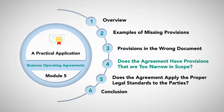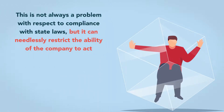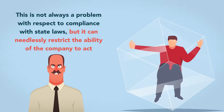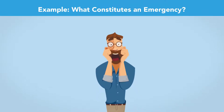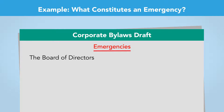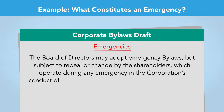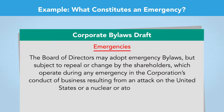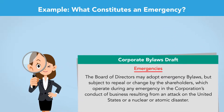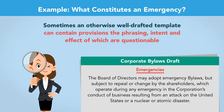Does the agreement have provisions that are too narrow in scope? The counterpart of missing or incomplete information in a template is a provision that's too confined in its application. This is not always a problem with respect to compliance with state laws, but it can needlessly restrict the ability of a company to act. What constitutes an emergency? Consider the following bylaws template provision: "The board of directors may adopt emergency bylaws, subject to repeal or change by the shareholders, which operate during an emergency in the corporation's conduct of business, resulting from an attack on the United States or a nuclear or atomic disaster." It's always good practice to read template-based agreements carefully, including what should be seldom or never used sections. Sometimes an otherwise well-drafted template can contain provisions the phrasing, intent, and effect of which are questionable.